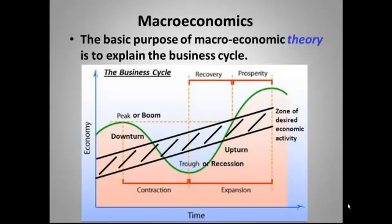Economies overheat, wages rise, raw materials get scarcer and more expensive, investors bid up the price of assets, including housing and stocks, until the bubble bursts. The overheated economy boils over — there are all sorts of metaphors people use — but basically, businesses lay off workers and the economy enters a recession. The economy then recovers and the whole process begins again.